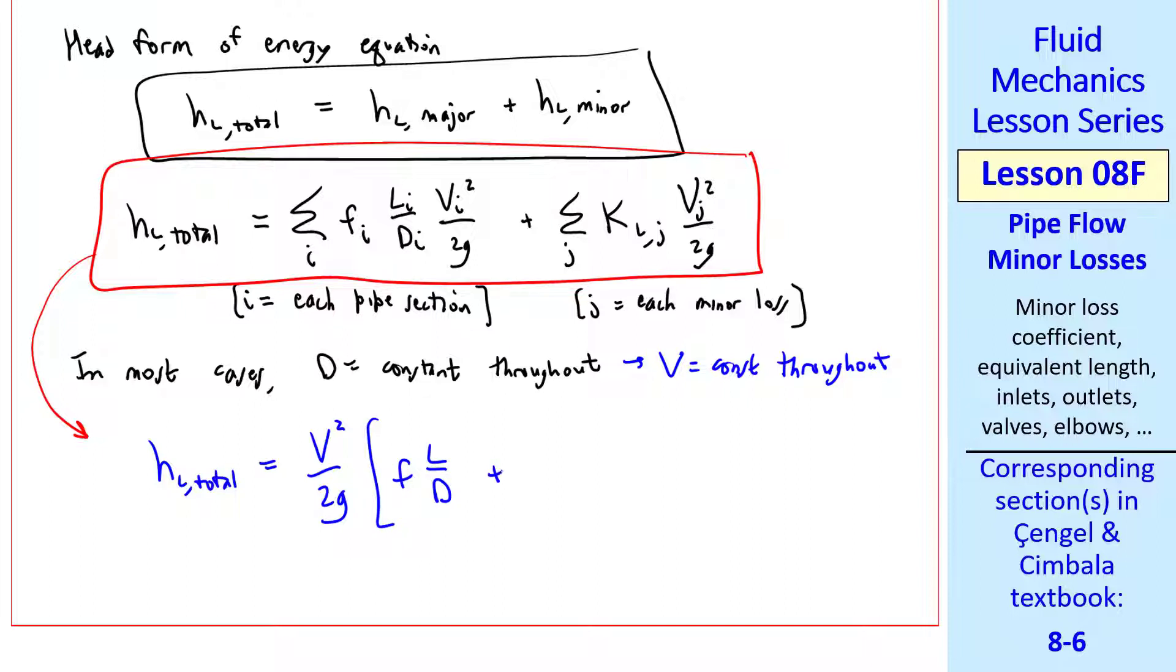So we have our major losses, plus our minor losses. This is the form we'll most often use, although this more general form is necessary when you have pipe sections of varying diameter.